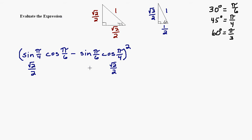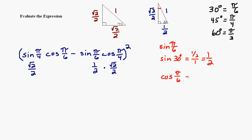Now we need to figure out the cosine of pi over 6 and the sine of pi over 6. Pi over 6 is 30 degrees, and the 30-degree angle is up here in the triangle. The sine of pi over 6, which is the sine of 30 degrees, is opposite over hypotenuse — that's 1/2 over 1, which is just 1/2. The cosine of pi over 6, or 30 degrees, is the adjacent side divided by the hypotenuse — dividing by 1, that's square root 3 over 2.